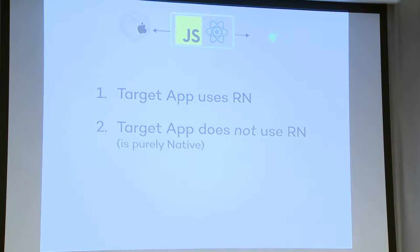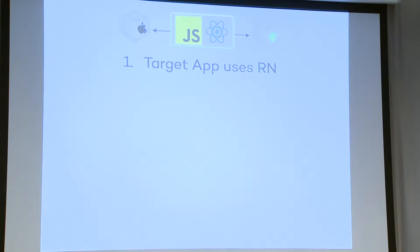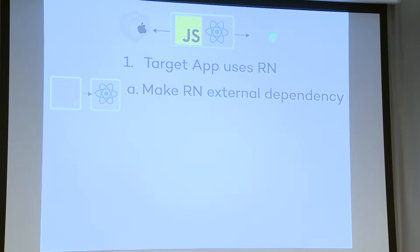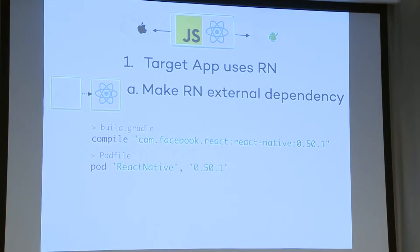There are two really different paths when you create a framework. The first is when your target app already uses React Native — you have to deal with cross dependencies, the transitive ones. The second is when your target app does not use React Native, is not aware of it, and is purely native. For the first option — target app uses React Native — one approach Andy mentioned is to just depend on React Native as an external dependency, via build.gradle or CocoaPods, whatever version you want.